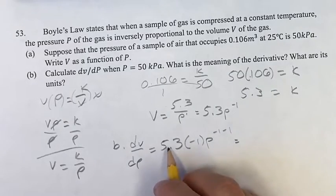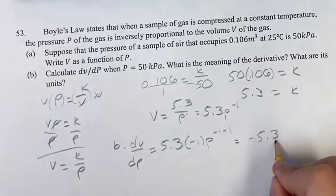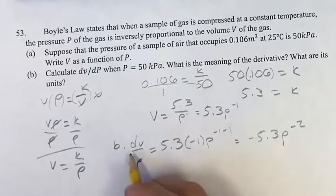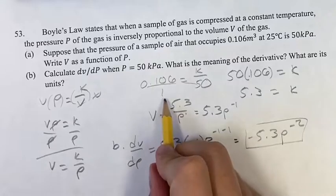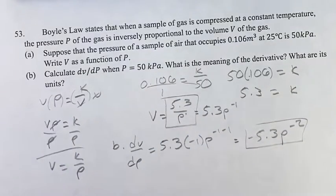Taking a look at this, 5.3 times negative 1 is negative 5.3. P to the negative 1 minus 1 is P to the negative 2. So dV/dP is negative 5.3P to the negative 2. That was what we were looking for in part A.